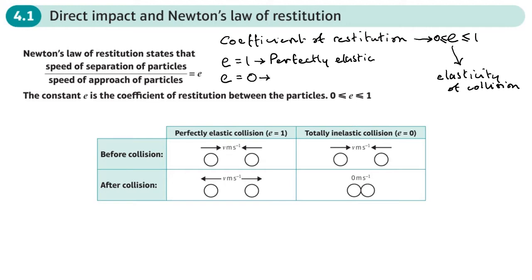If the value of e is zero, we have things which are perfectly inelastic, which means when they collide they stop moving completely. Imagine plasticine — two bits thrown towards each other just become one blob and stop moving. That's an example where e equals zero. Things that are almost perfectly elastic might be snooker balls or pool balls.